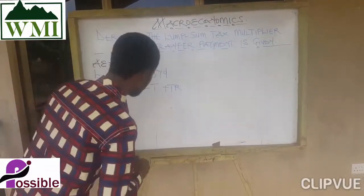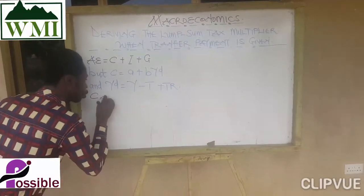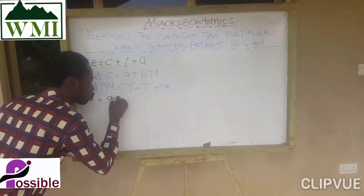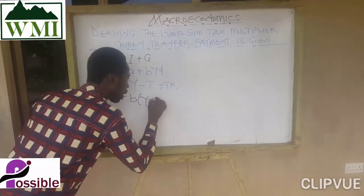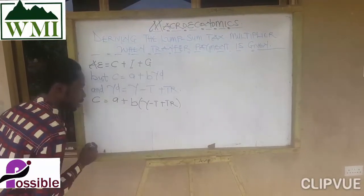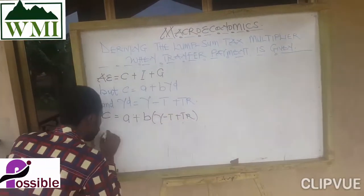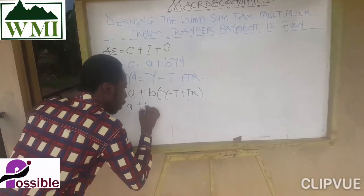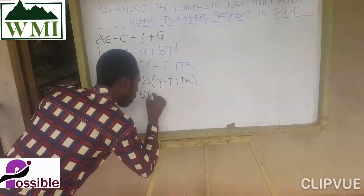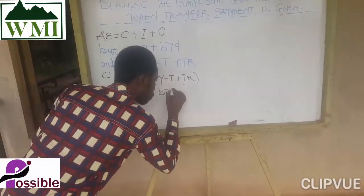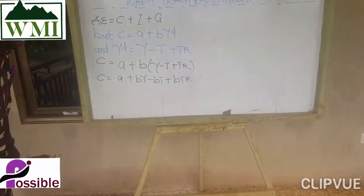So the new consumption function is going to be: C equals A plus B times (Y minus T plus TR). If you expand this, you get consumption equal to A plus BY minus BT plus BTR.